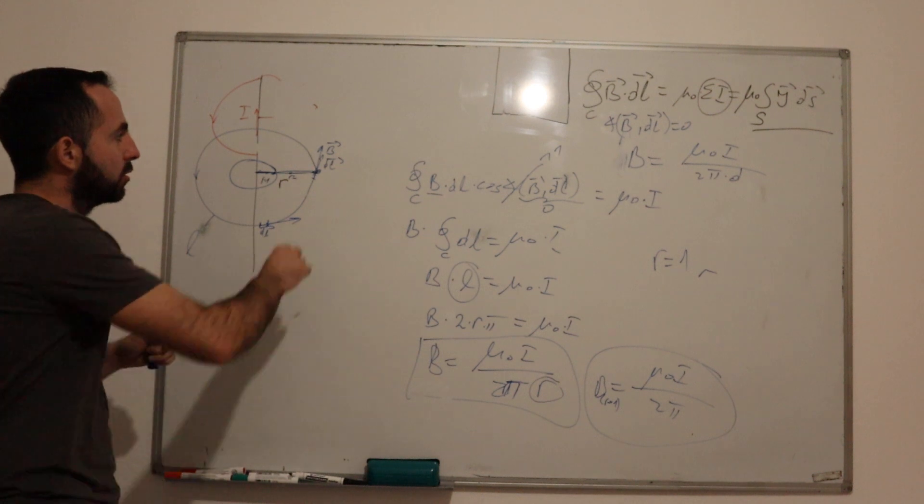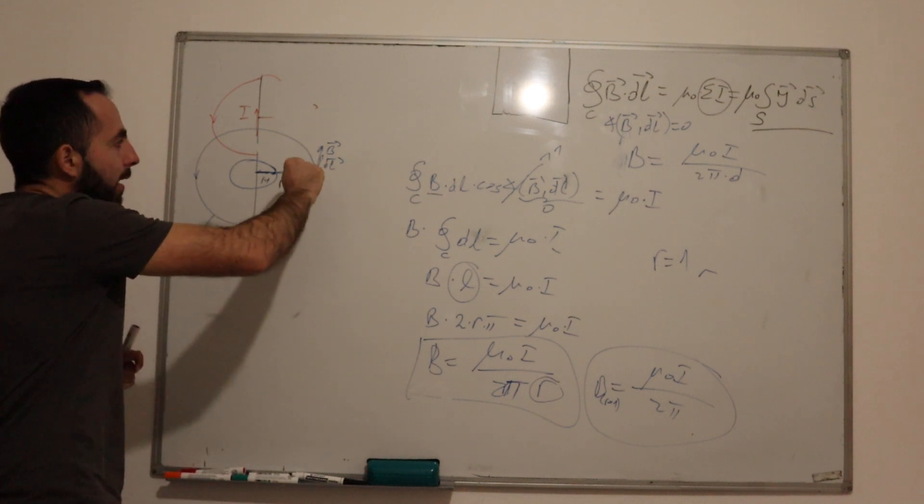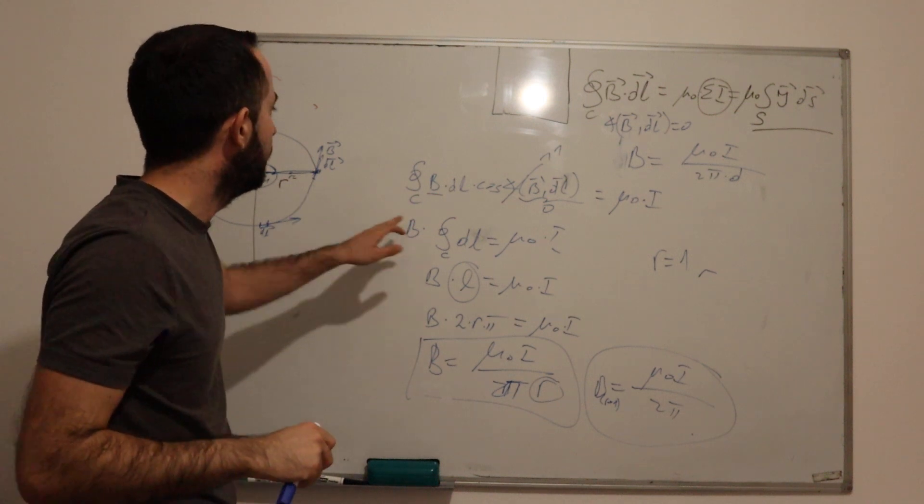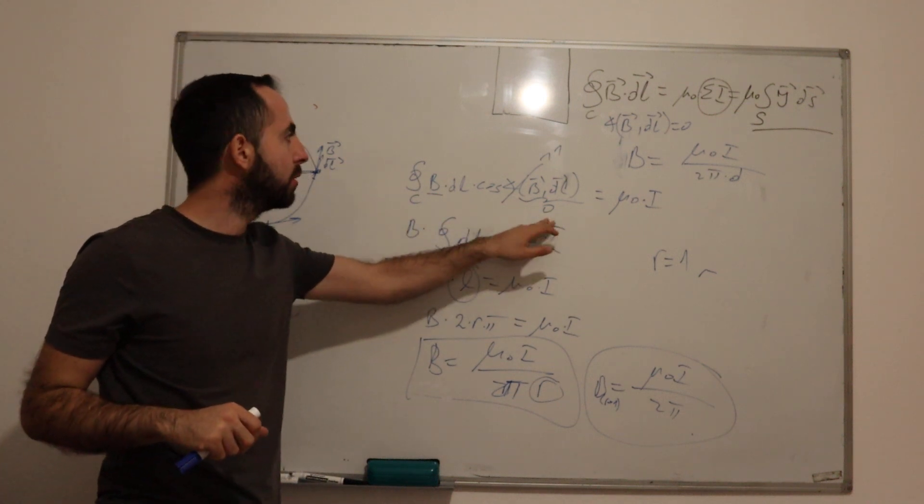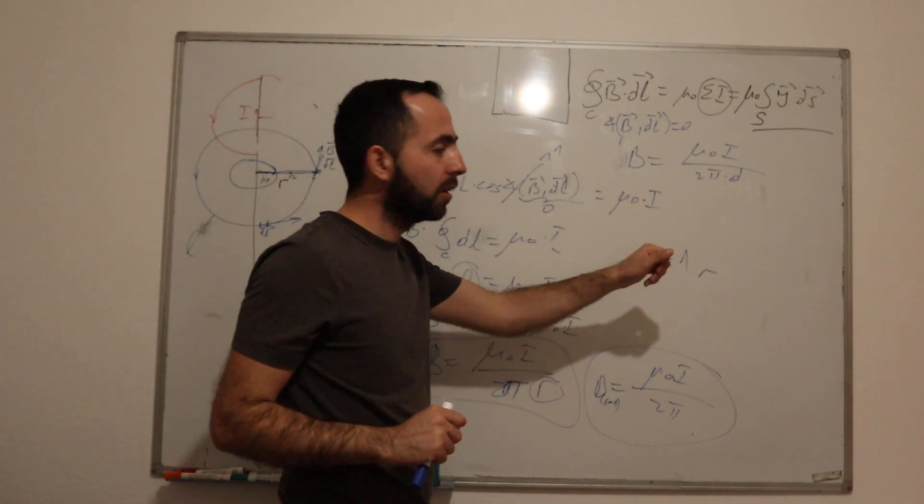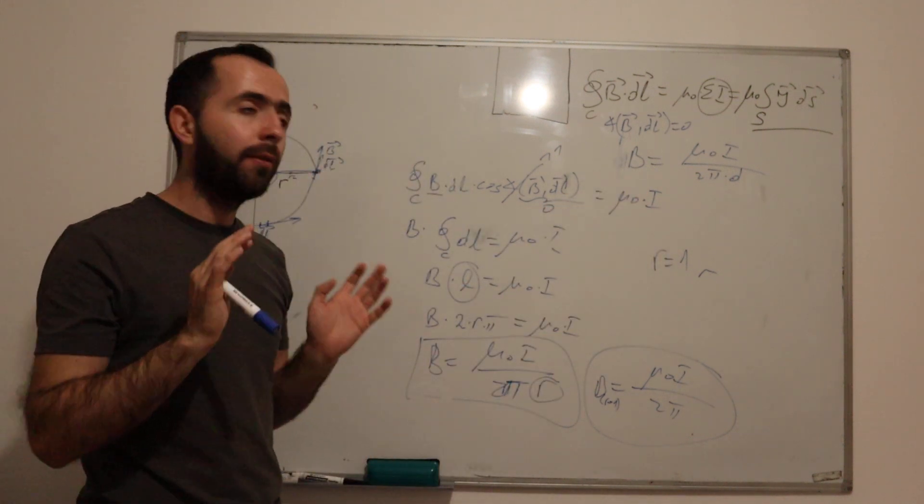We will choose its direction so that the angle of dL is the same as B, which means that we will get cosine α here. And this is equal to μ₀ times the sum of all currents.